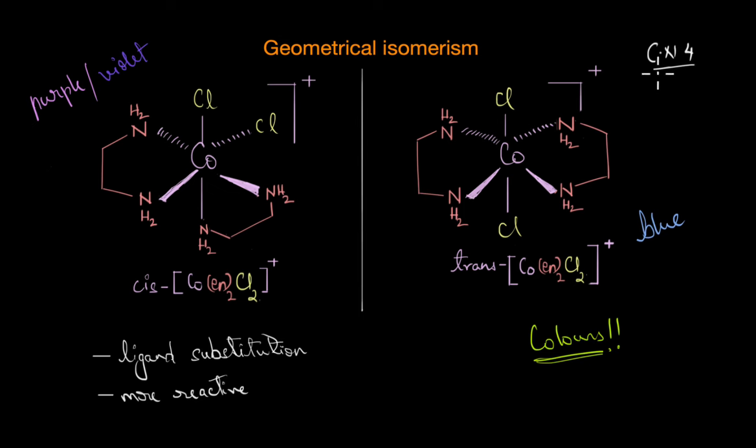Now the geometries that correspond to coordination number 4 are square planar and tetrahedral. But can they both exhibit geometrical isomerism? Why or why not? Let's learn all about that in the next video.